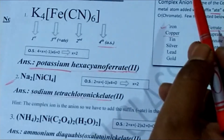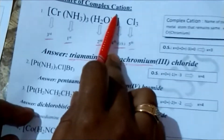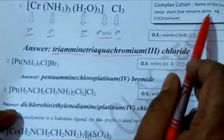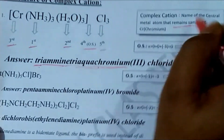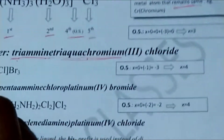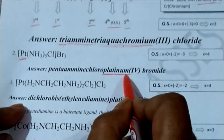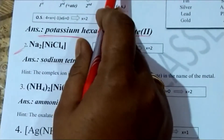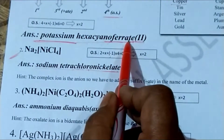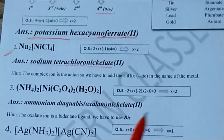Don't get confused between complex cation and anion naming. For complex cations the central metal atom name remains the same — chromium stays chromium, platinum stays platinum. But for complex anions we add '-ate': iron becomes ferrate, nickel becomes nickelate, and so on.